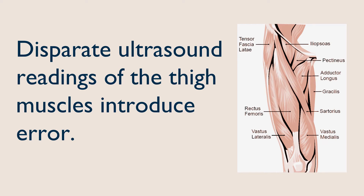Moreover, the best image acquisition site remains unknown, with one-half, two-thirds, and three-fifths of the femur length all being used to image the quadriceps. Additionally, the number of images needed for adequate analysis is also unstandardized, and recent studies show muscle layer thickness may actually underestimate muscle loss, so we're already starting with an inherent error.